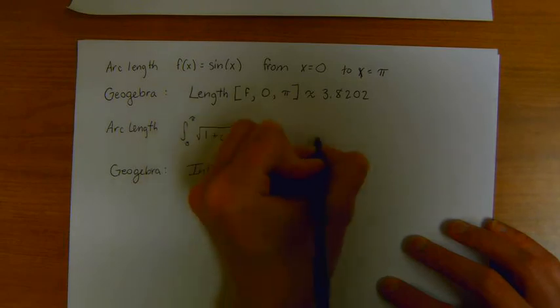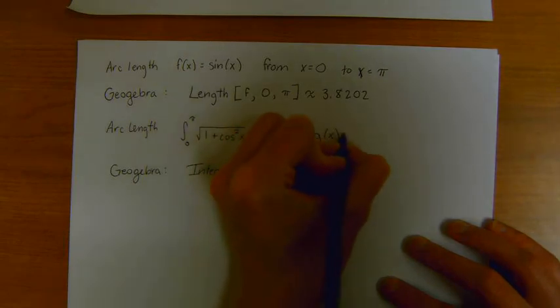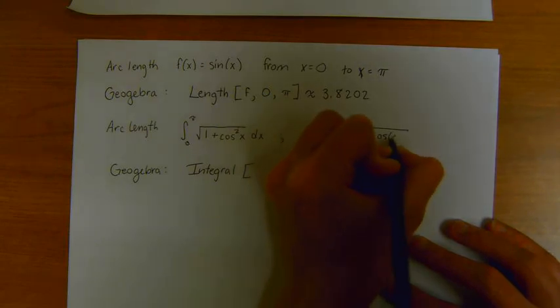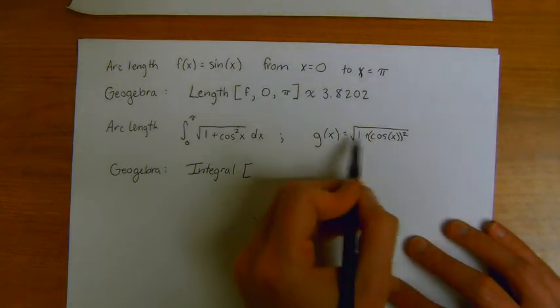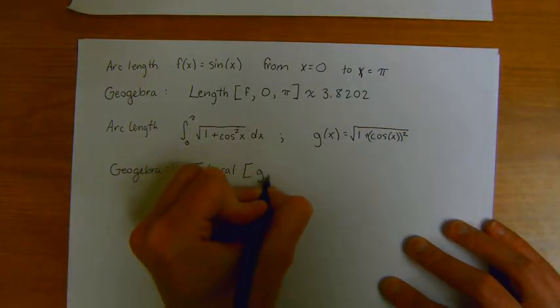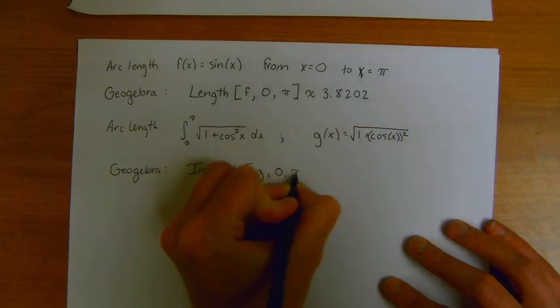In this case, we would say g of x is equal to the square root of 1 plus cosine. And in GeoGebra, you have to write cosine of x squared. That this is this function. So we're taking the integral of g from 0 to pi.